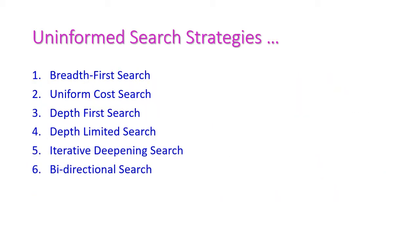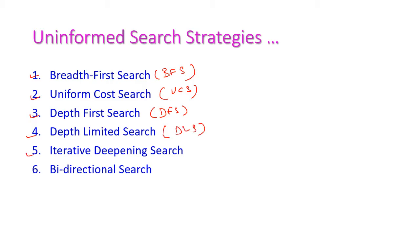Next, we are going to see the different uninformed searching techniques available in our syllabus. The first one is breadth first search, otherwise called BFS. The second one is uniform cost search, UCS. The next one is depth first search, DFS. Then depth limited search, DLS. Then iterative deepening search. And the last one is bidirectional search. These are the six different uninformed searching strategies we are going to see in the first unit.